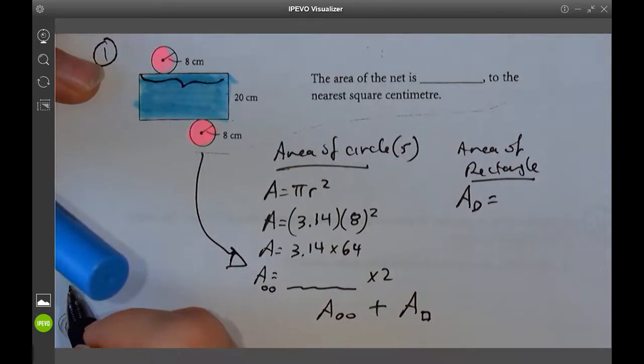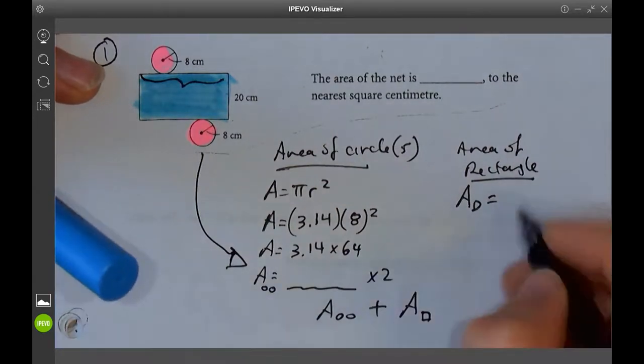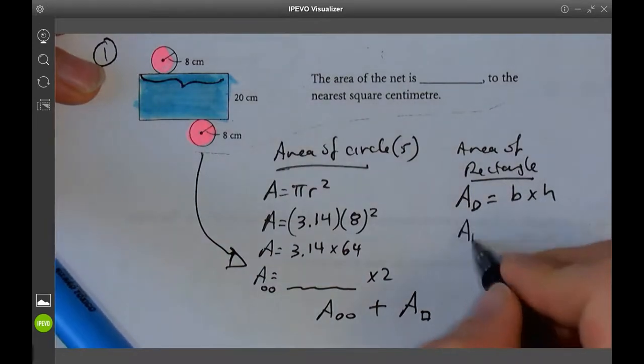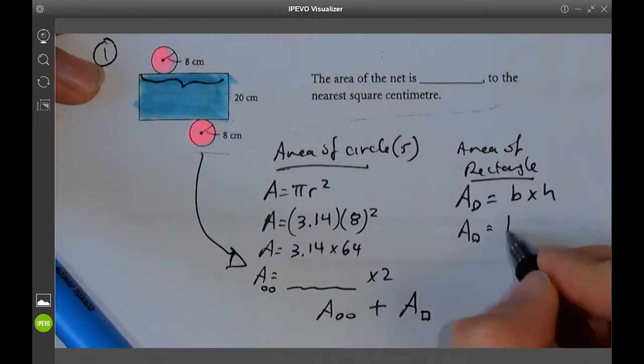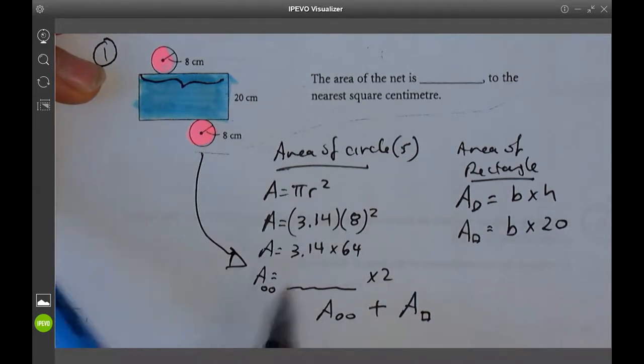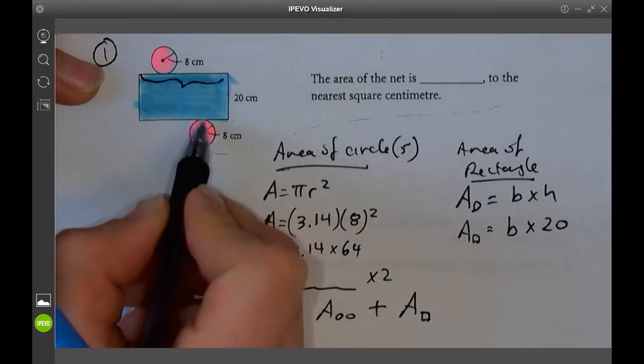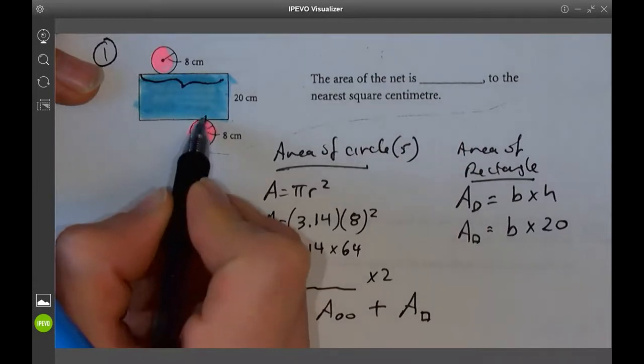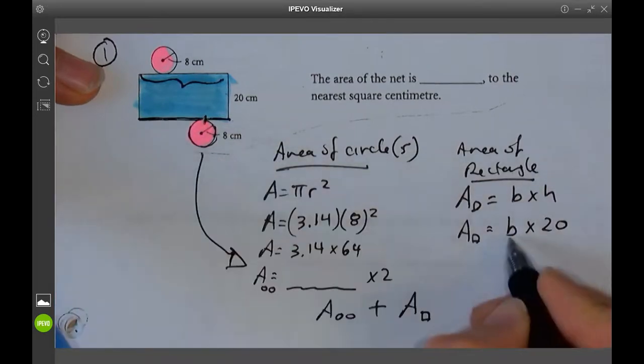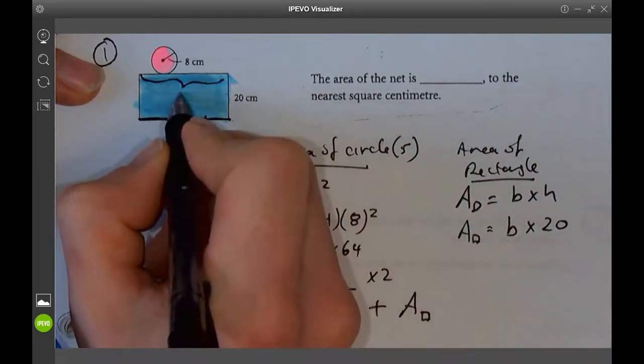Well, it doesn't show me anything. So how on earth am I going to get that? Base times height. We know the height is 20. What is the base? Well, if we know what we do with this, when we cut this up, this circumference should exactly match this length. So the base, or this B, is actually circumference.